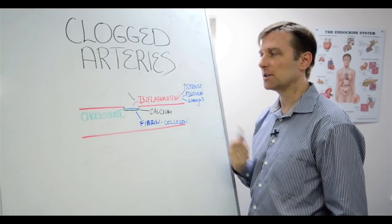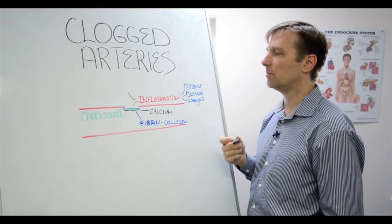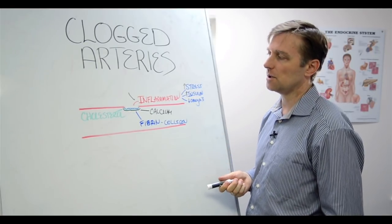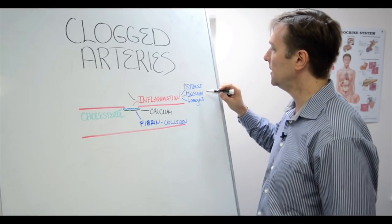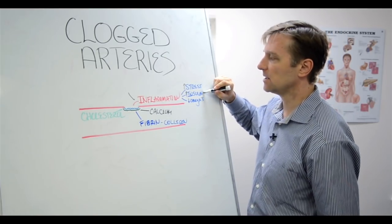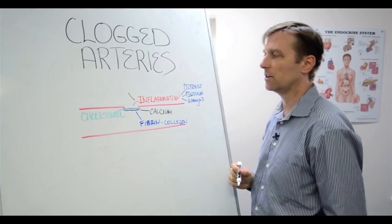Breads, pasta, cereal, crackers, biscuits, sugar, all that stuff. Our body, an average American consumes 149 pounds of sugar every single year. So that's a lot of insulin. Of course, that's going to create inflammation in your arteries.